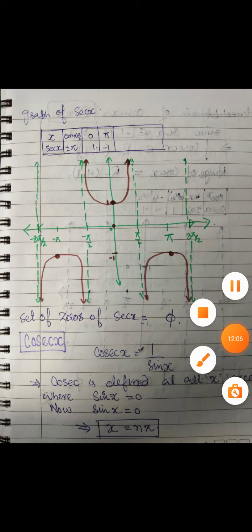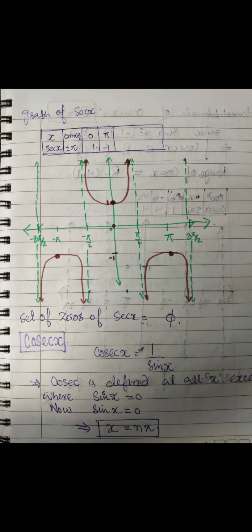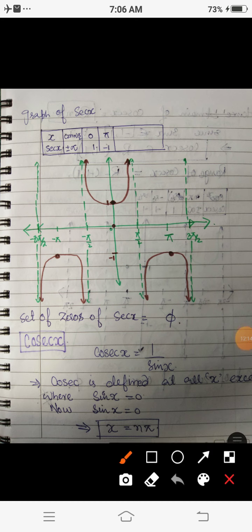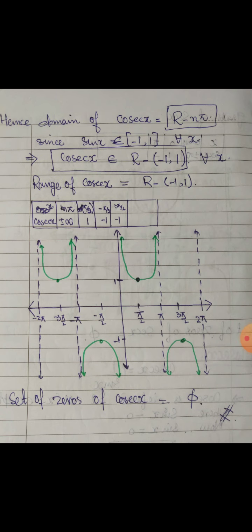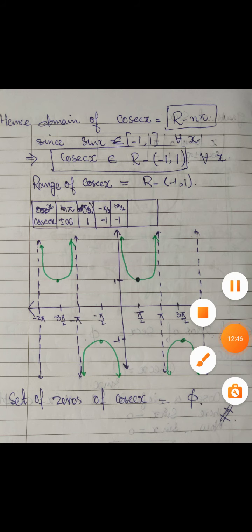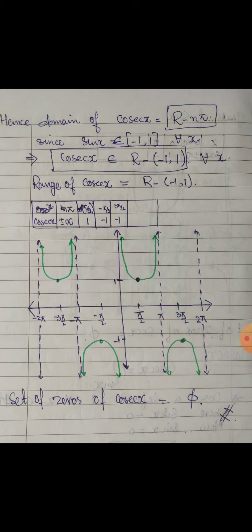The last function is the cosecant function. Cosec is defined as 1 upon sin x. So cosec is defined only when sin x is not equal to zero. Sin x equals zero when x equals nπ, so the domain of cosec is ℝ minus {nπ}. Like cosine, the value of sin also lies between minus 1 and 1. By the same reasoning as for sec, the range of cosec is ℝ minus the open interval (−1, 1).